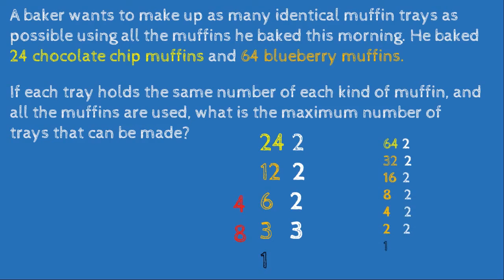Factors of 64: 64 ÷ 2 = 32, ÷ 2 = 16, ÷ 2 = 8, ÷ 2 = 4, ÷ 2 = 2, ÷ 2 = 1. We can now clearly see the greatest common factor of 24 and 64 is 8. So the maximum number of trays that can be made is 8.